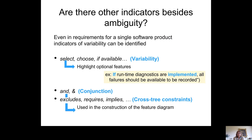Moreover, we found other indicators besides ambiguity that can be interesting. These include words like 'select' or 'choose', and escape clause sentences such as: 'if runtime diagnostics are implemented, all failures should be available to be recorded' — the subordinate clause contains 'if' and 'implemented', making it an escape clause. Additionally, words like 'requires', 'implies', and 'excludes' can be used to find conjunctions and cross-tree constraints in feature diagrams.